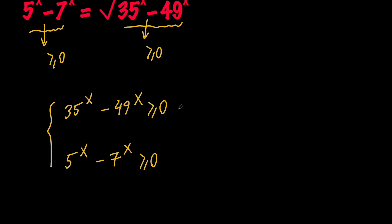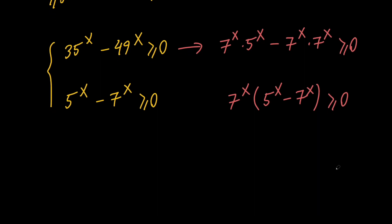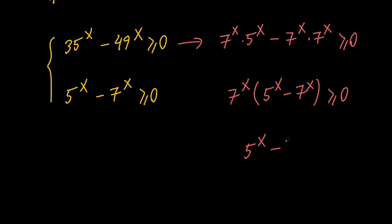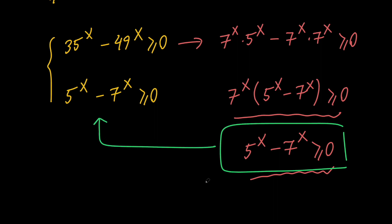From the first restriction, we can say that 7 to the x times 5 to the x minus 7 to the x times 7 to the x is non-negative. We can factor out 7 to the x to get 7 to the x times (5 to the x minus 7 to the x). We want this to be non-negative, but notice that 7 to the x is always positive. So we just need 5 to the x minus 7 to the x to be non-negative. This restriction is the same as the second one, so both restrictions mean the same thing — we only have one restriction.